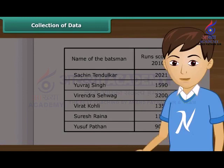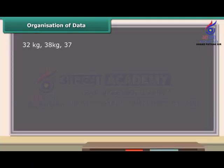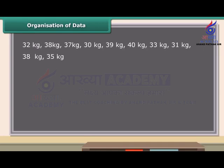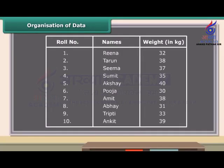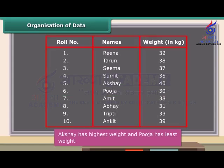So children, unless and until you don't collect the appropriate data, you cannot know the desired information. We collect data to record and organize it. Look at the following data. A class teacher of class 7 listed the weight of 10 students. Is this data easy to understand? Now look at this data. You can easily know which student has the highest weight and which has the least. So when we put data in a proper table, it becomes easy to understand and interpret.